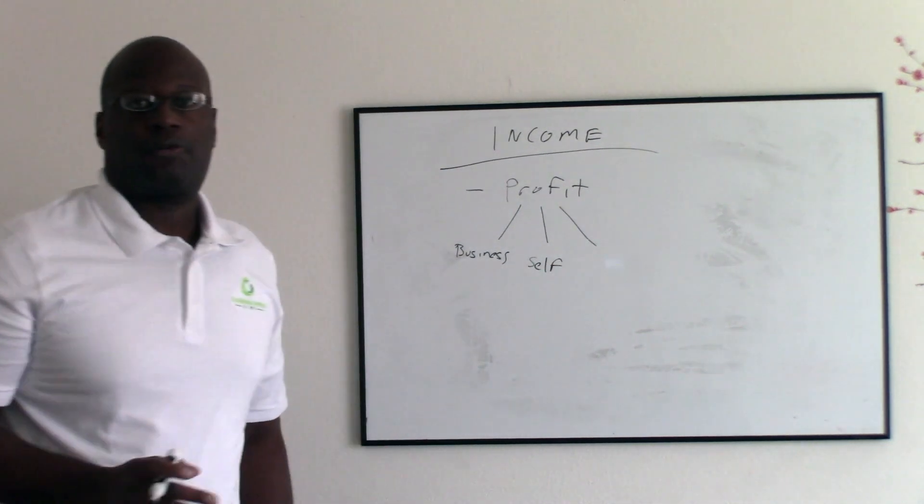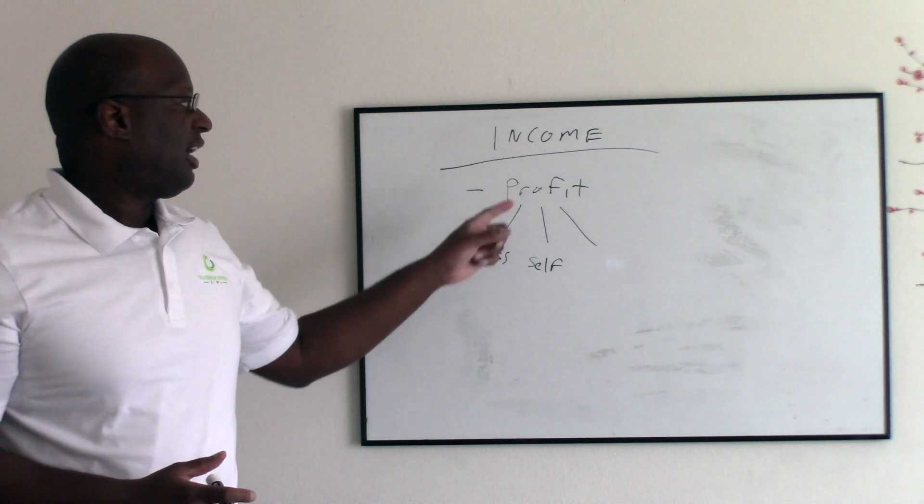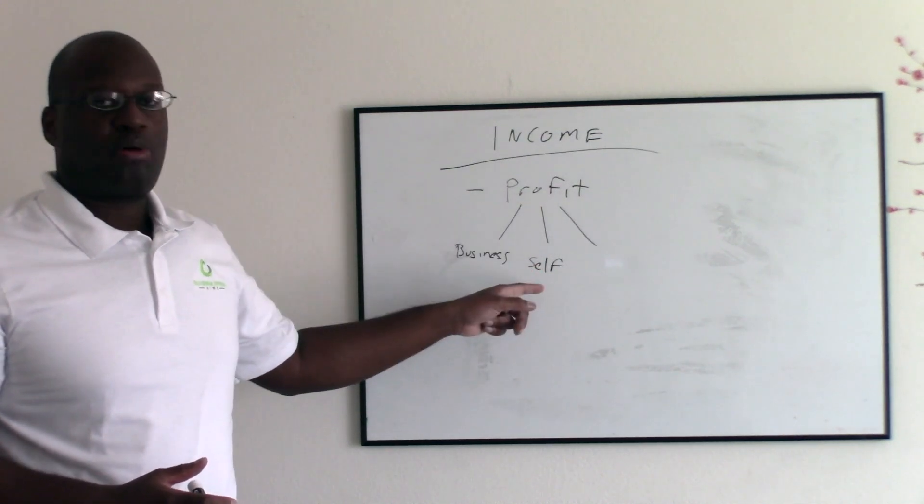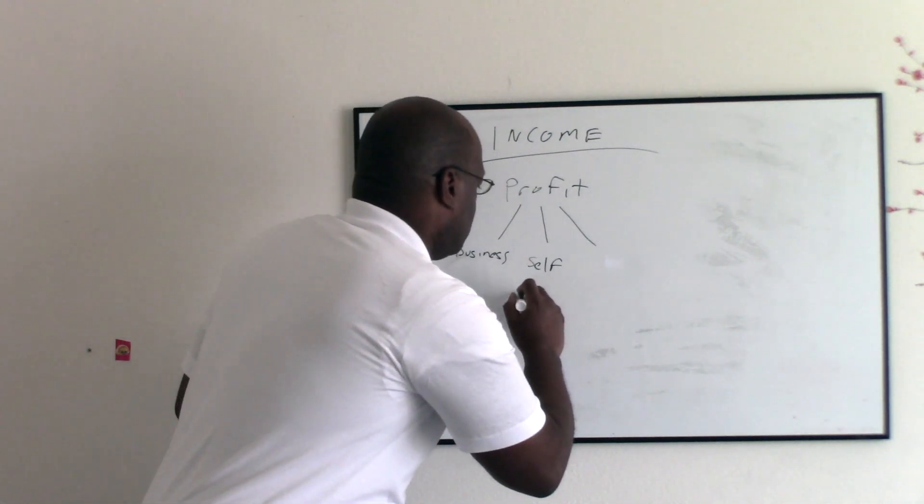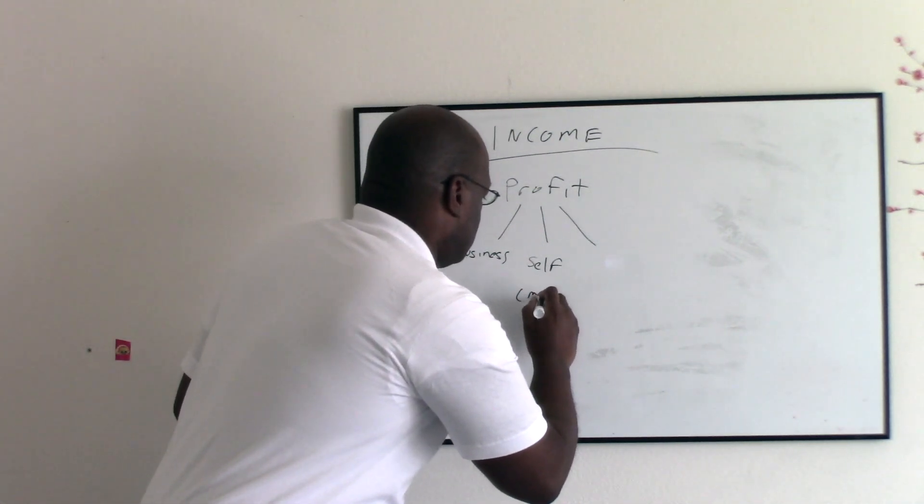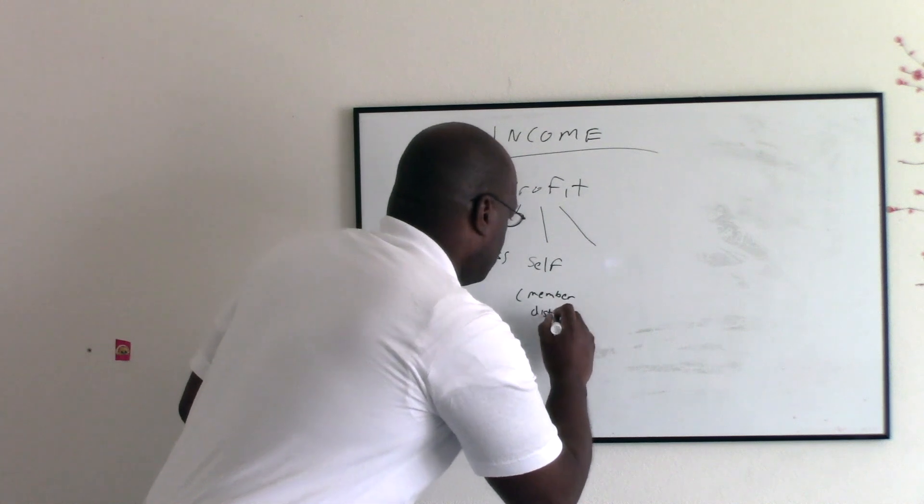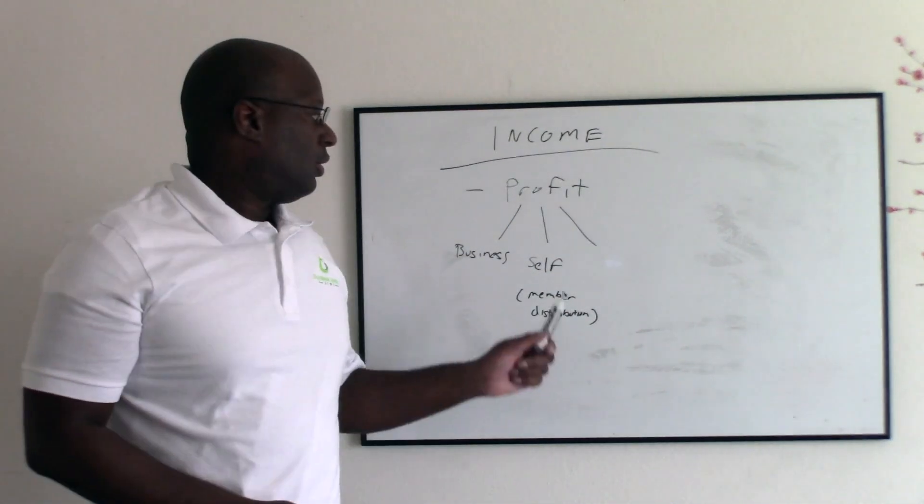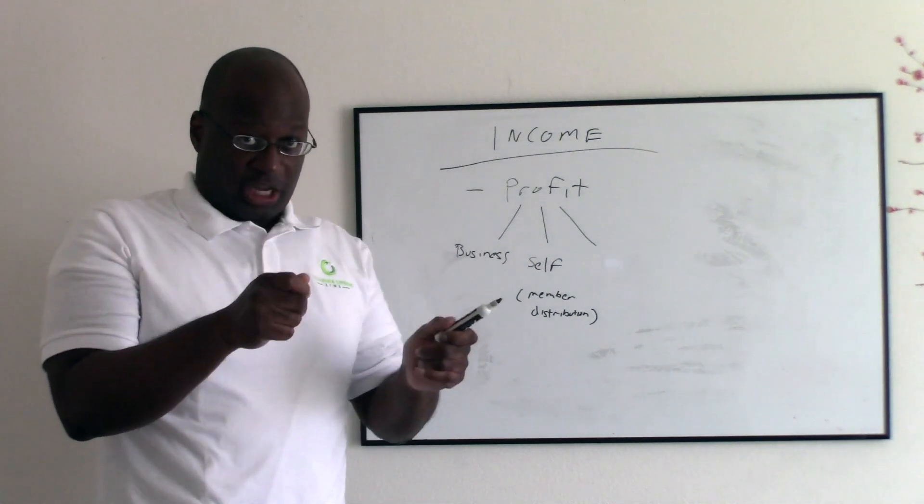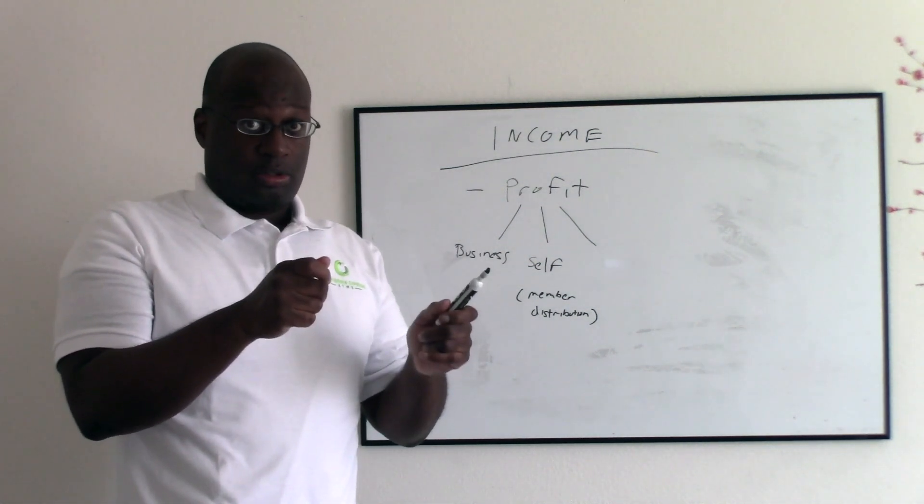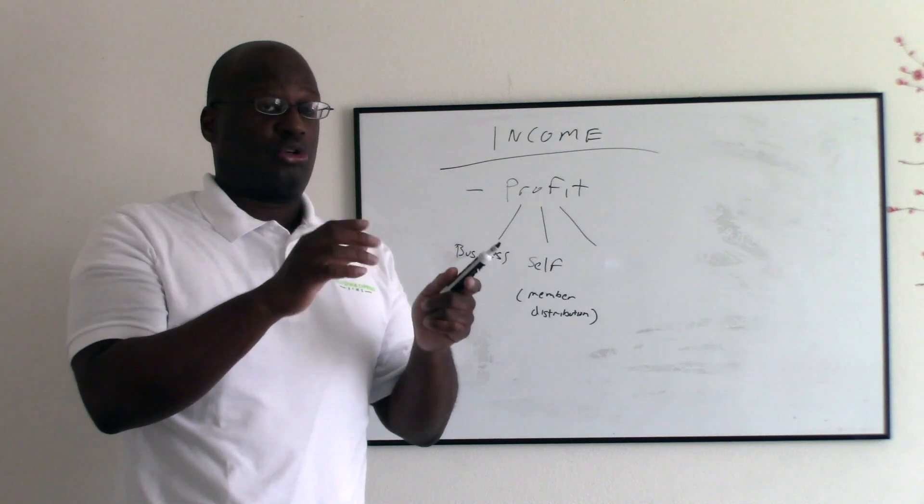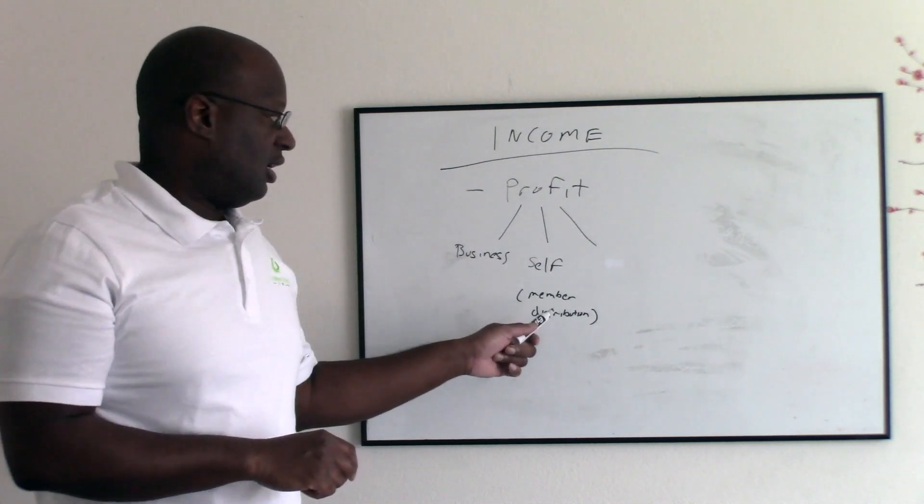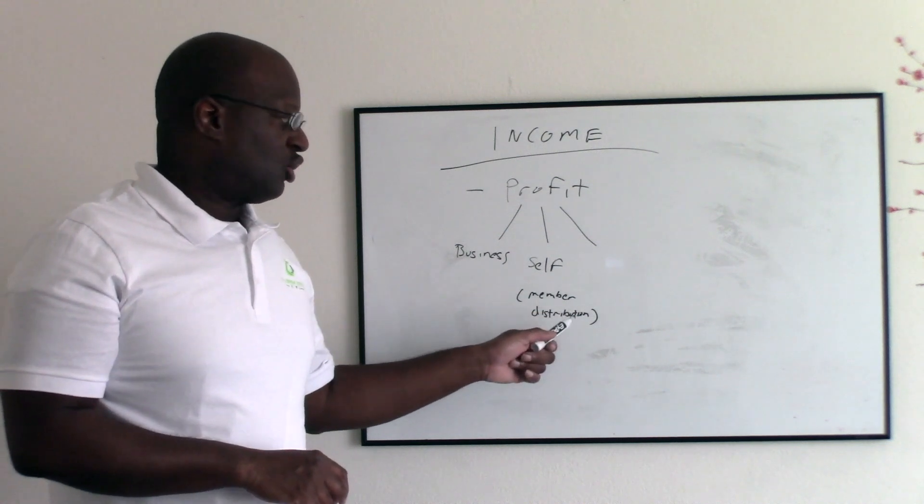So the second branch of this is going to be for yourself. So you're going to pay yourself a salary out of this. So you're going to pay your salary out of that profit to yourself and you're going to write a check. You're going to write a check to yourself from your business checks from a business account, from your LLC business account.